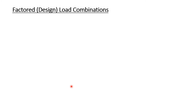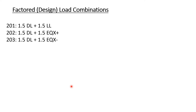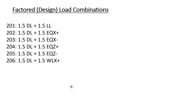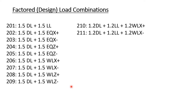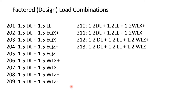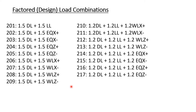Coming to the factored load combinations: the first is 1.5 dead load plus 1.5 live load. Then 1.5 dead load plus 1.5 earthquake load in positive x, negative x, positive z, and negative z. Then 1.5 dead load plus 1.5 wind load in positive x, negative x, positive z, and negative z. The next combination is 1.2 dead load plus 1.2 live load plus 1.2 wind load in positive x, negative x, positive z, and negative z. Then 1.2 dead load plus 1.2 live load plus 1.2 earthquake load in positive x, negative x, positive z, and negative z.